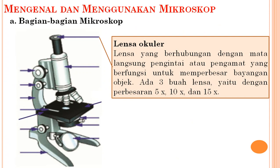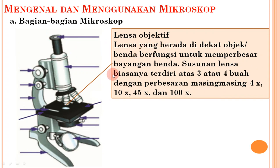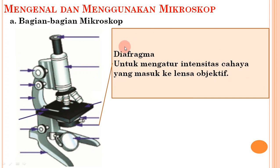Bagian-bagian mikroskop: pertama, lensa okuler — lensa yang berhubungan langsung dengan mata pengamat, berfungsi memperbesar bayangan objek, tersedia tiga buah dengan perbesaran 5x, 10x, dan 15x. Kedua, lensa objektif — lensa yang berada di dekat objek, berfungsi memperbesar bayangan benda, terdiri atas tiga atau empat buah dengan perbesaran masing-masing 4x, 10x, 45x, dan 100x. Ketiga, diafragma — untuk mengatur intensitas cahaya yang masuk ke lensa objektif.